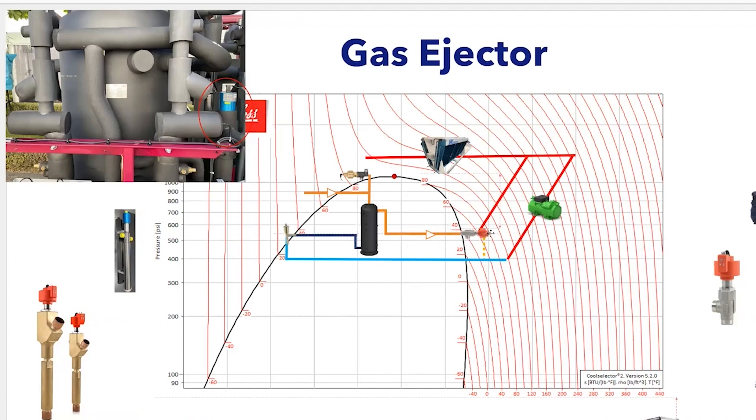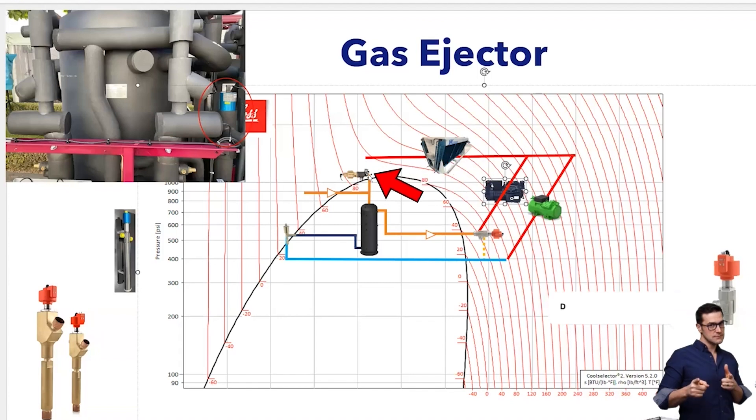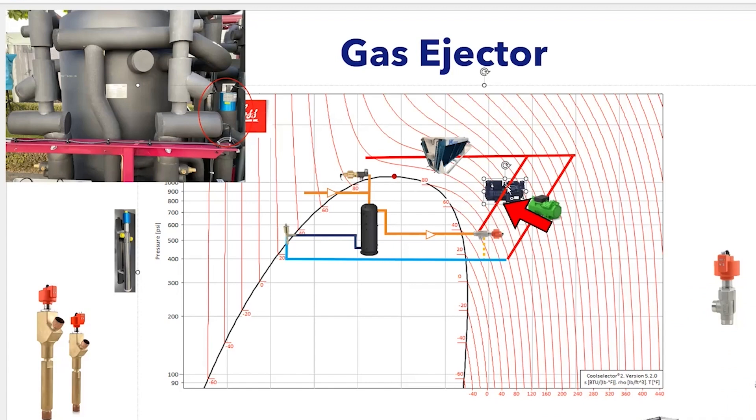Now with the ejector and parallel compression, you'll have a parallel compressor. The medium temp goes through our gas cooler condenser, comes down through our throttling valve, our high pressure valve into our flash tank. When it's really warm out, this gas will go through the parallel compressor.